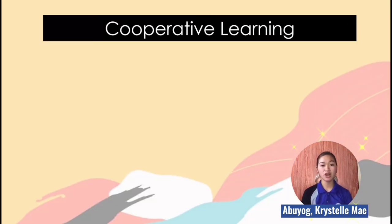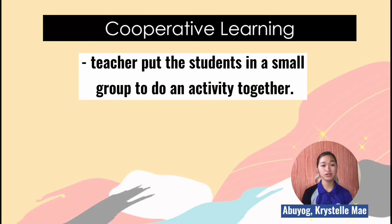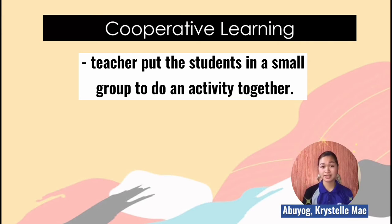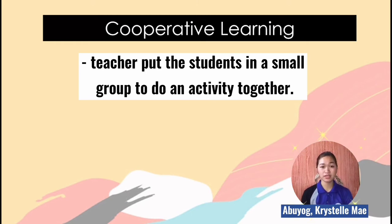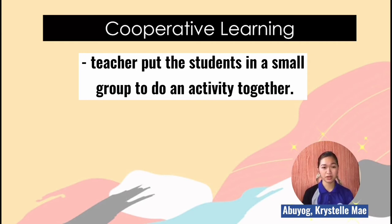When we say cooperative learning, the teacher puts students in small groups to do an activity together. Students take the lead in the activities and the teacher only provides guidance as needed. The teacher does not put the same students together for each activity but changes groupings, so there will be no bias in choosing members. In that way, students will learn with a variety of partners.